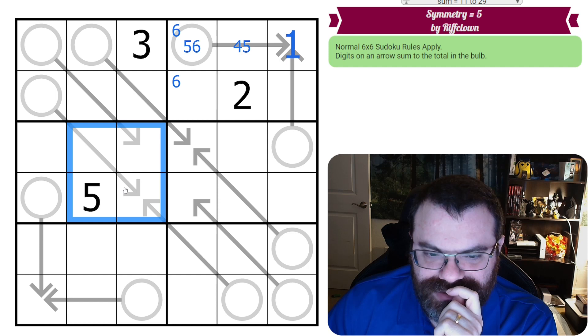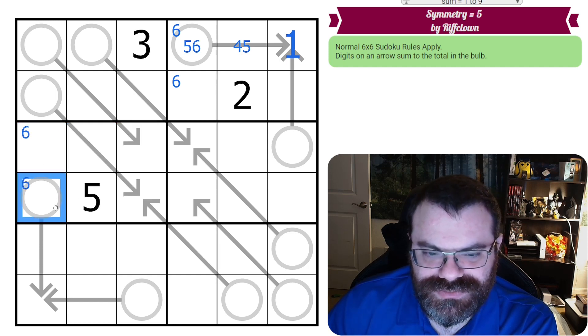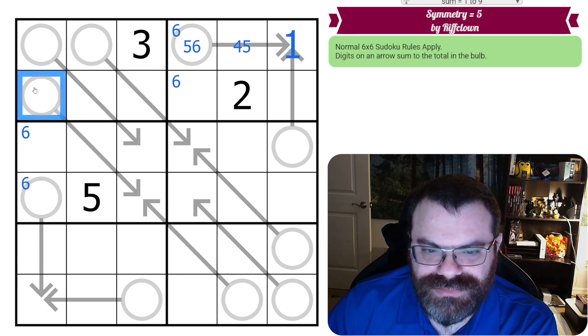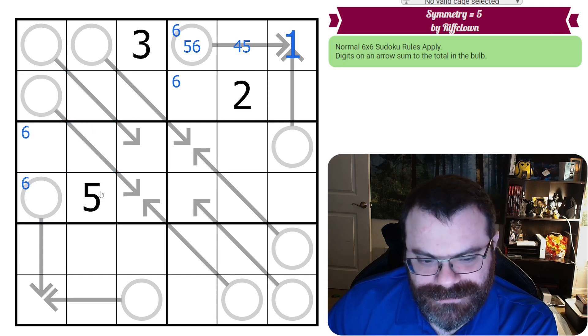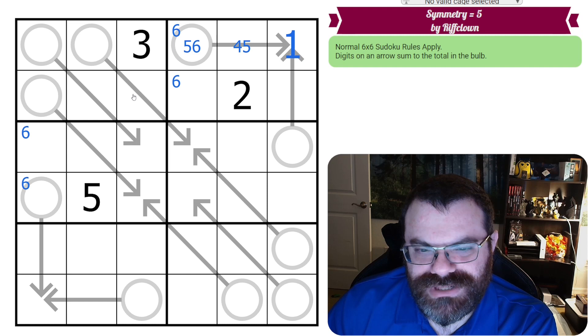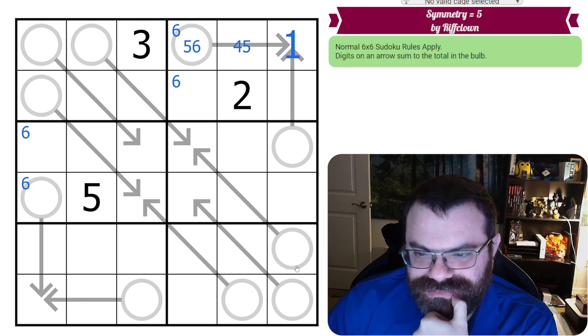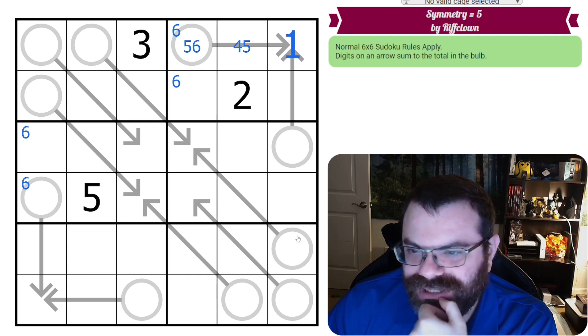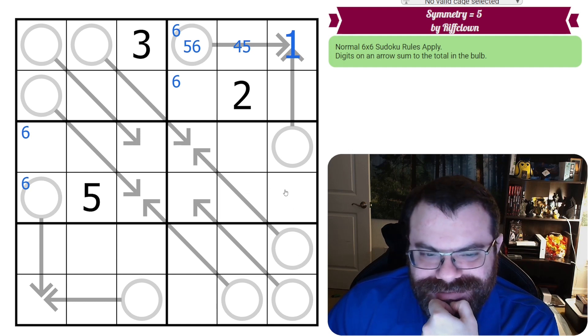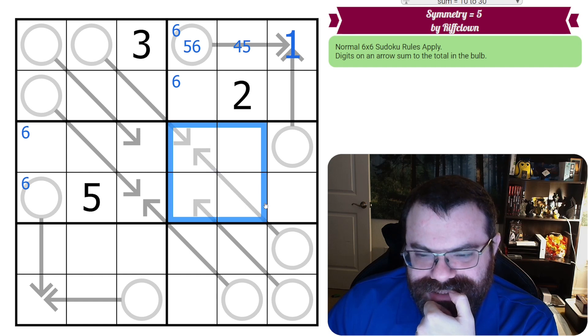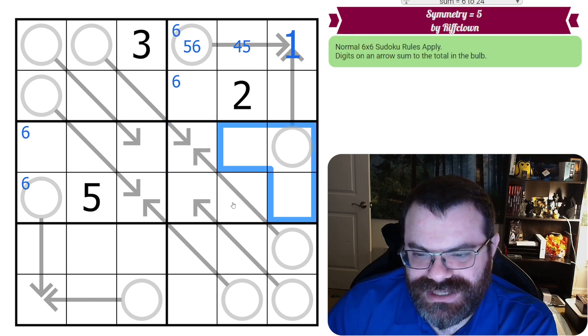Yeah, 6 doesn't go on an arrow. And it's not 5. So 6 is in one of these two. And obviously it can't go on an arrow because that would already blow out the sum. What else can we do here? I feel like I'm missing an important observation, basically. 6 in this box can't be on the arrow, but I guess it could be anywhere here.